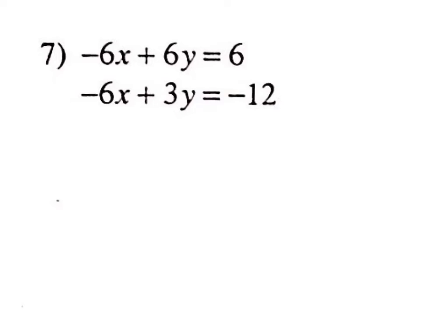It turns out that even though the problem looks like this, you can do what is called forced elimination. Forced elimination is when you make something the number that you need it to be. For example, this is negative 6x. If I wanted it to cancel out with this negative 6x, this would have to be a positive 6x. Negative 6x plus 6x would cancel out. So is there something I can multiply by to make this a positive 6x? If I simply multiply by negative 1, it becomes positive 6x. But math rules say you can't just multiply one thing by negative 1 — you have to multiply everything by negative 1.